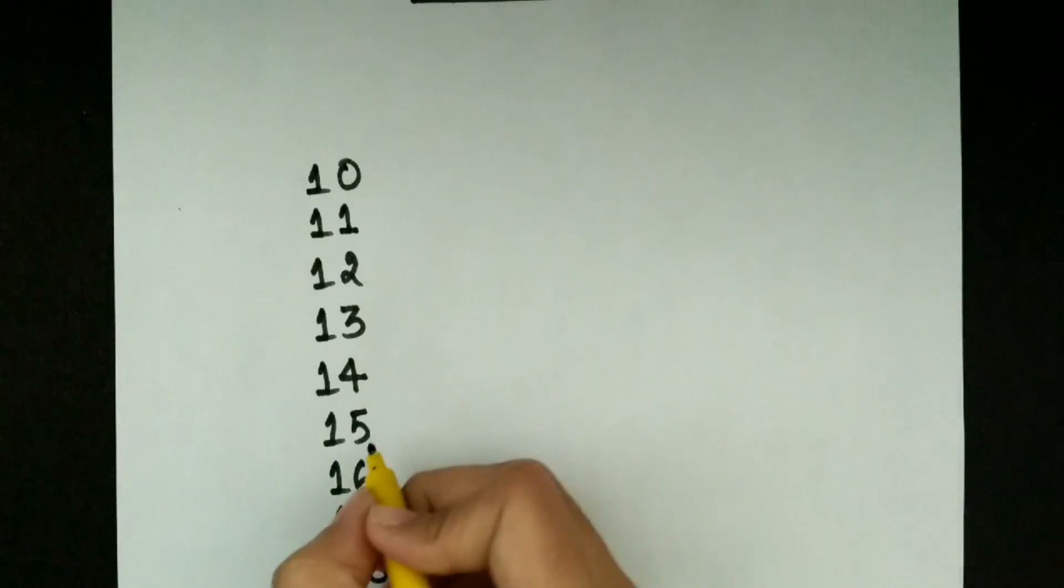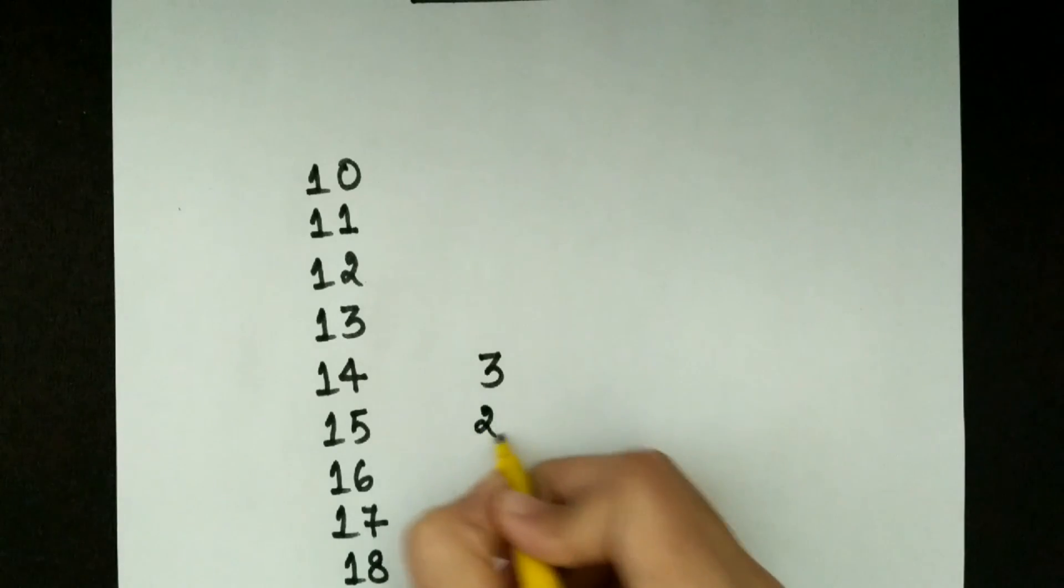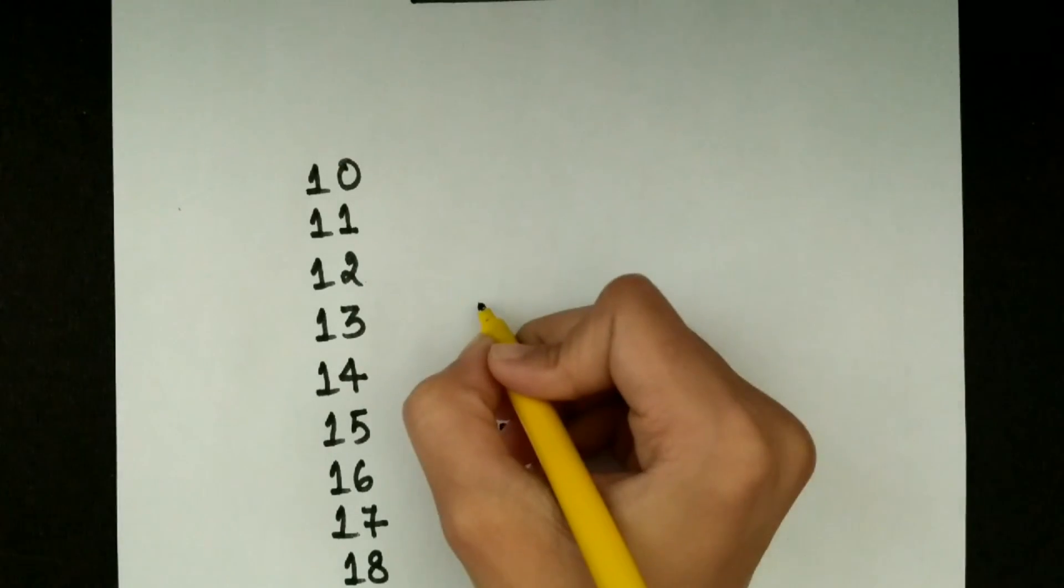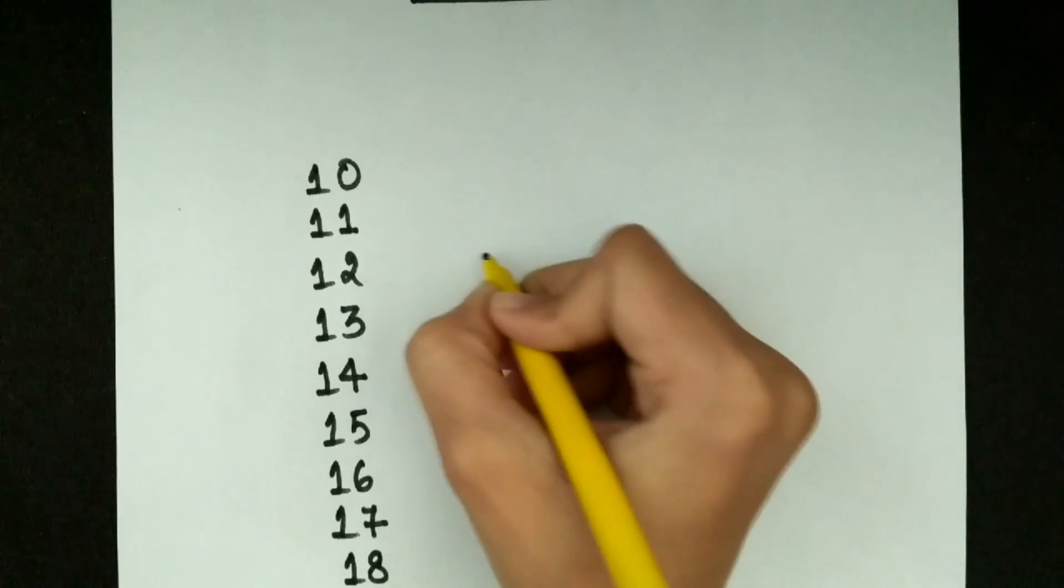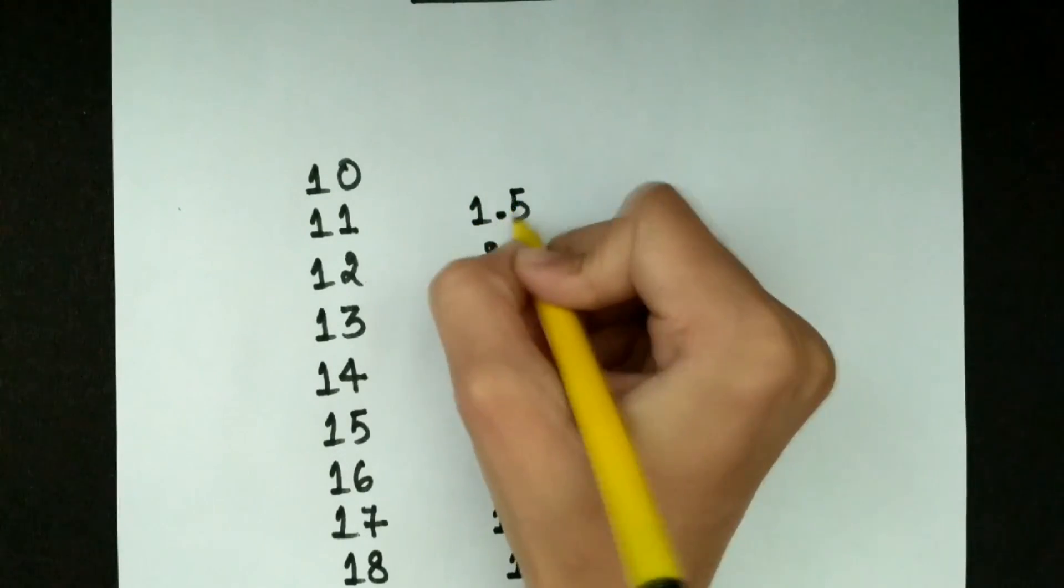So in front of 14 write 3, in front of 15 write 2.5, then 2, 1.5, and 1. Here write 2.5, 2, 1.5, and 1.